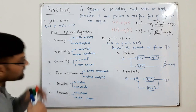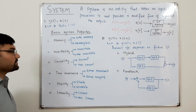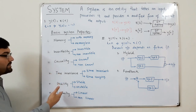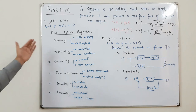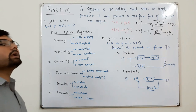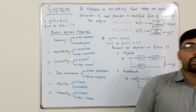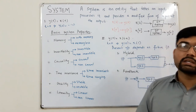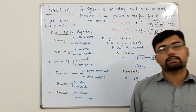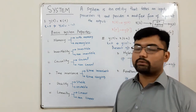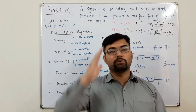Right now you don't yet know what memory, invertibility, causality, time invariance, stability, and linearity mean for a system — so from the next video we'll deal with each one separately. That's all for today's introduction to systems. See you in the next lecture covering the very first property. Till then, take care of yourselves and everyone around you. Goodbye.